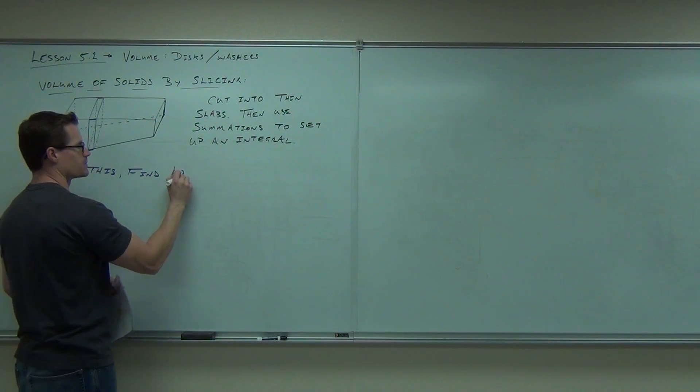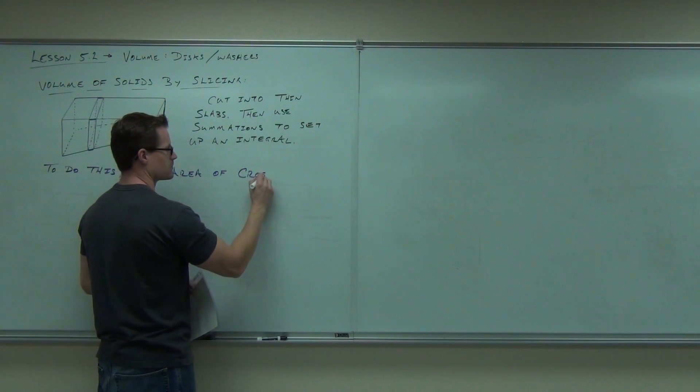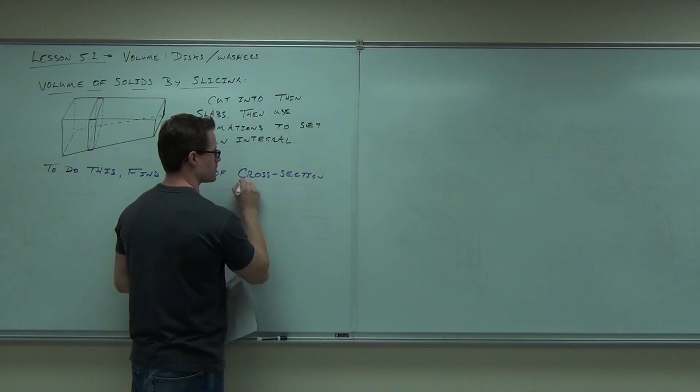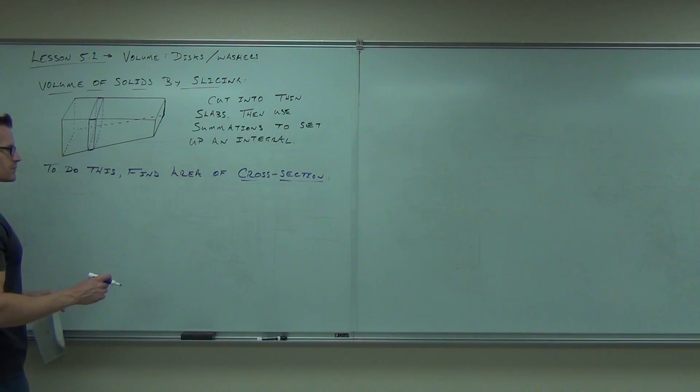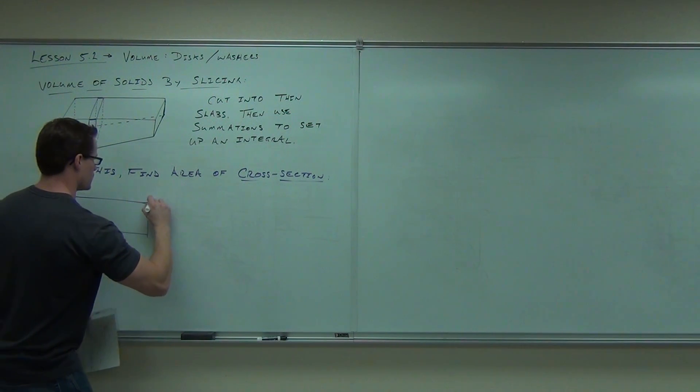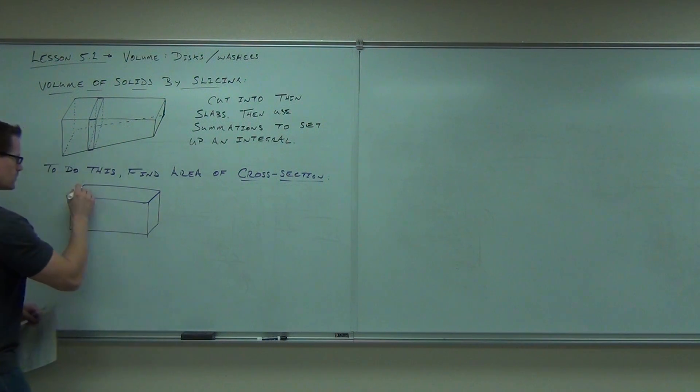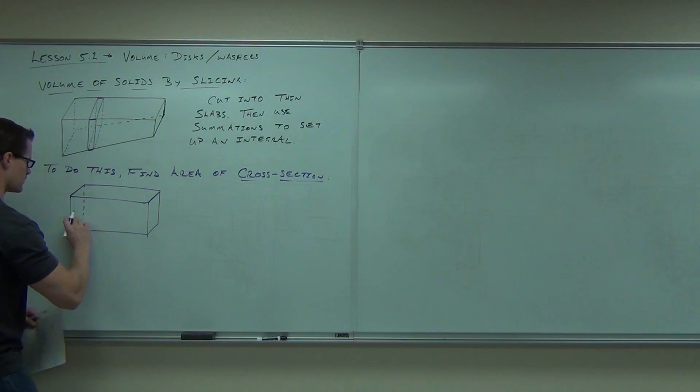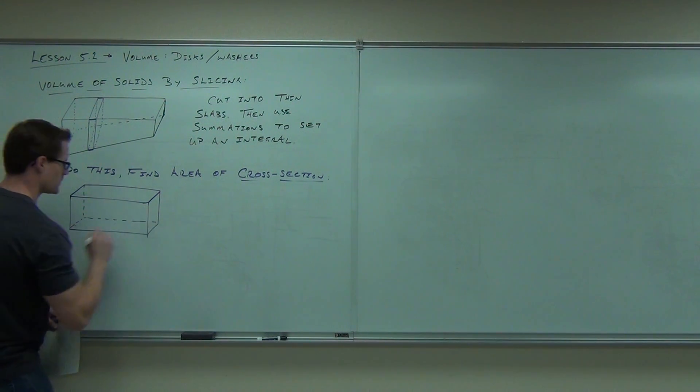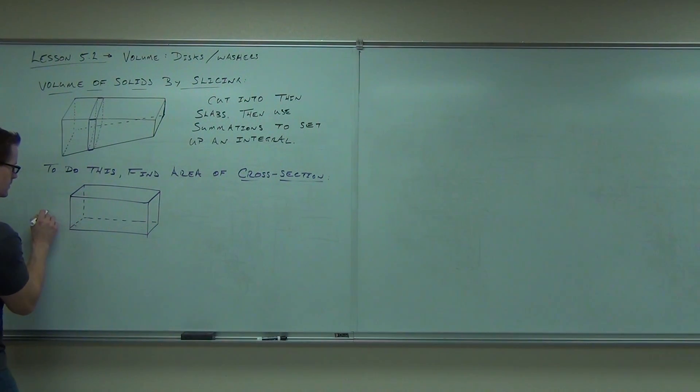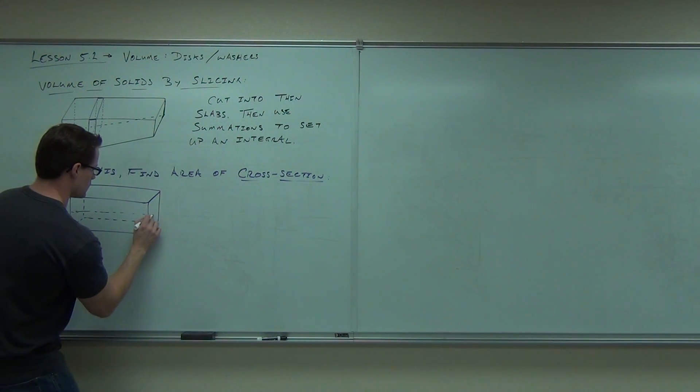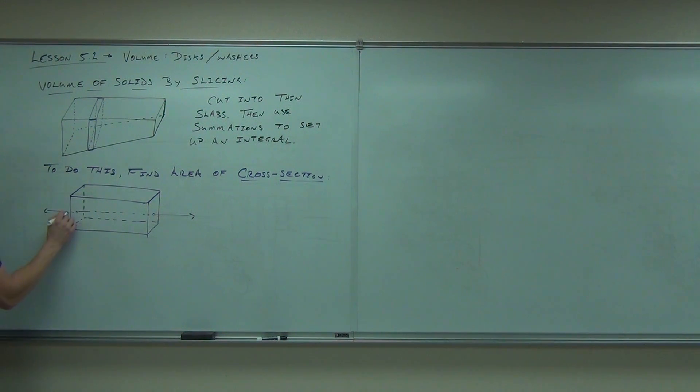In order to do this, we've got to find the area of cross-section. Well, in general, we would do this. If we had just a basic rectangular prism going through some axis, like maybe the x-axis.